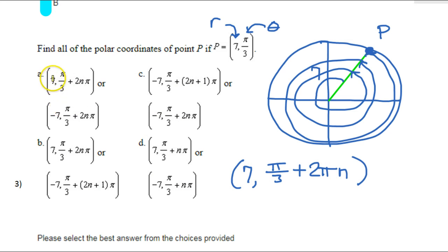So I see 7, pi over 3 plus 2 pi N. Well, 2 N pi, 2 pi N, that's the same thing. So this is a potential answer. I also see it here. 7, pi over 3, 2 N pi. So this is a potential answer.